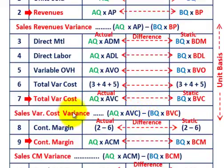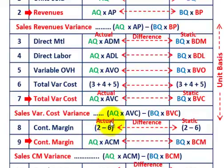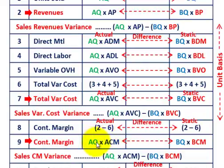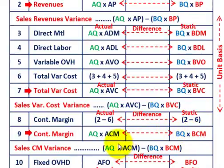Our contribution margin is revenues minus total variable costs, calculated for both the actual and static budgeted amounts, giving us the contribution margin variance. On a per-unit basis, it's actual quantity times actual contribution margin per unit, compared to budgeted quantity times budgeted contribution margin per unit. That difference is the sales contribution margin variance.